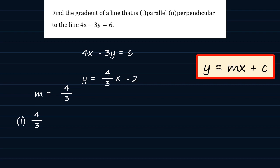On part 2, they want the gradient of the line perpendicular to this line. Now, we know that the gradient of the perpendicular line should be the negative reciprocal. So, it should in turn come out as minus 3 quarters.